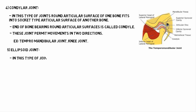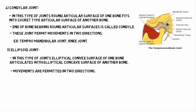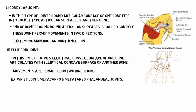Next is the condyloid joint. In this type of joint, the elliptical convex surface of one bone fits into the elliptical concavity of another bone. Movements are permitted in two directions. Examples are the wrist joint and the metacarpophalangeal and metatarsophalangeal joints.